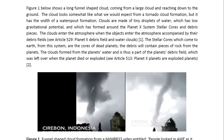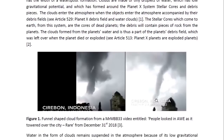The stellar cores which come to Earth from the system are the cores of dead planets. The debris will contain pieces of rock from the planets. The clouds formed from the planet's water and it's thus a part of the planet's debris field which was left over when the planet died or exploded. You may look at article 513 entitled Planet X Planets or Exploded Planets.